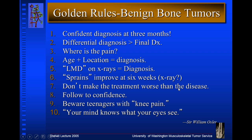Don't make the treatment worse than the disease. These benign bone tumors have a very high recurrence rate. You want to do effective treatment. What the most effective treatment is can be controversial, and we don't want to have this child occupying clinic for their entire childhood. Follow the child to confidence — if you don't have a confident diagnosis on plain x-ray, repeat the x-ray in another four to six weeks, get a different kind of image, or get a consult with an orthopedic surgeon.